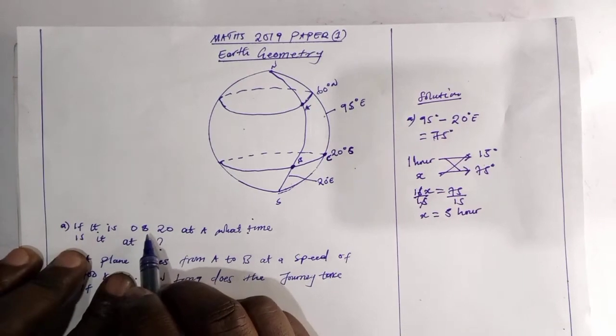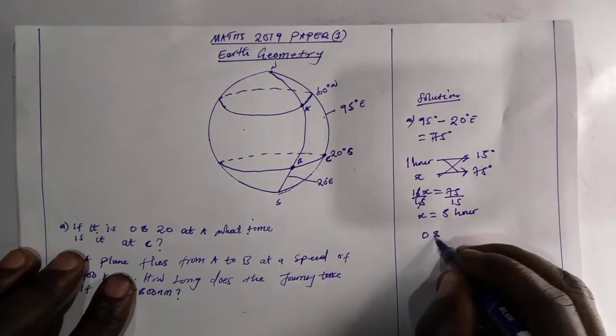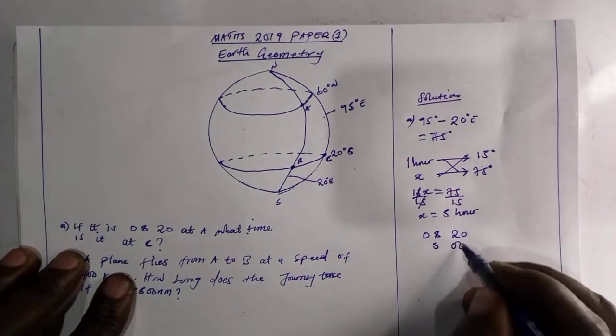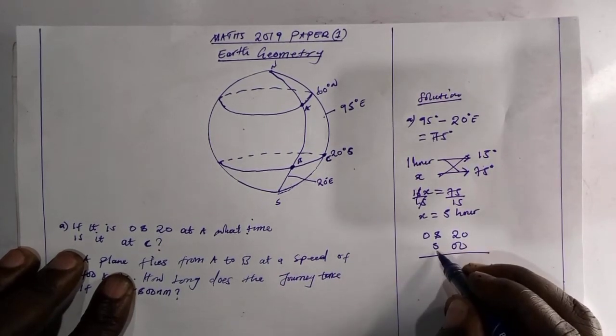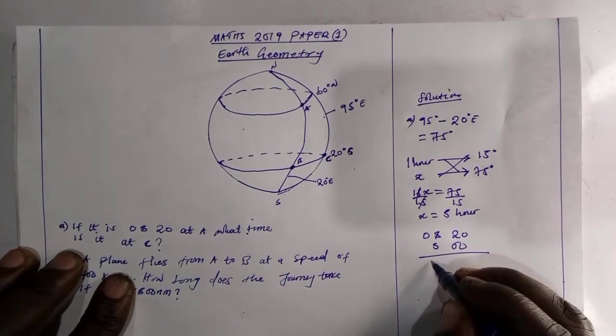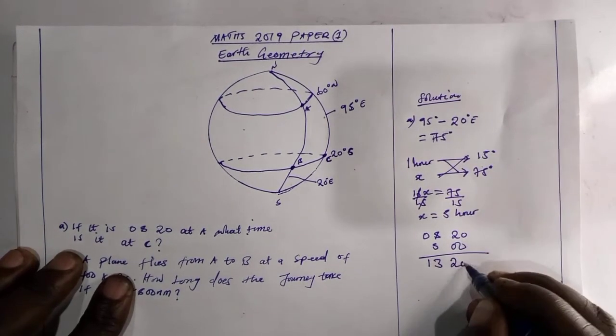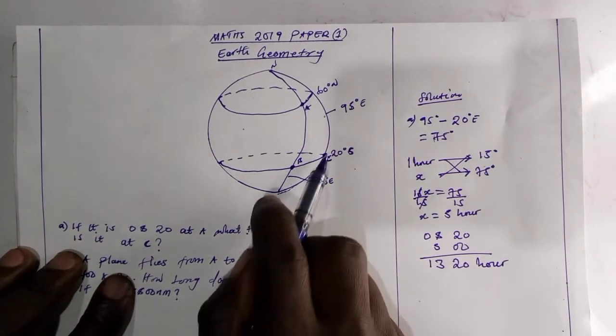So that means we have 5 hours in 75 degree. So what you have to do, you have to add from this time, which we have here, which is 8:20, plus 5 hours, in which we are going to have 8 plus 5, which is 13. So it would be 13:20 hours. That would be time at C.